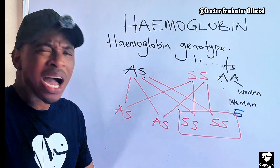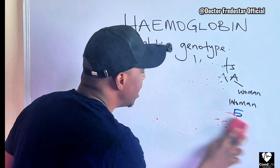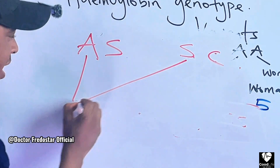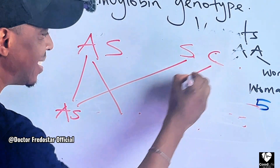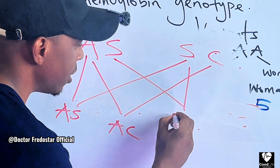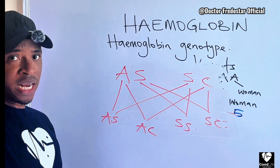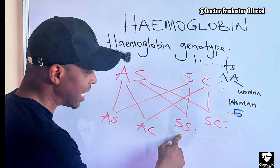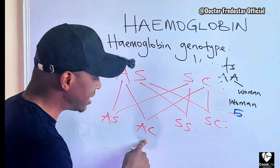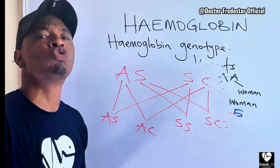But doctor, I love my partner — calm down, let me tell you. What if you are AS and your partner is SC? Is there a problem? If your A meets their S, the child could be AS. If your A meets their C, the child could be AC. If your S meets their S, the child could be SS. If your S meets their C, the child could be SC. So anytime you have a child, they can be AS, AC, SS, or SC — the chances of giving birth to an SS child are very high.